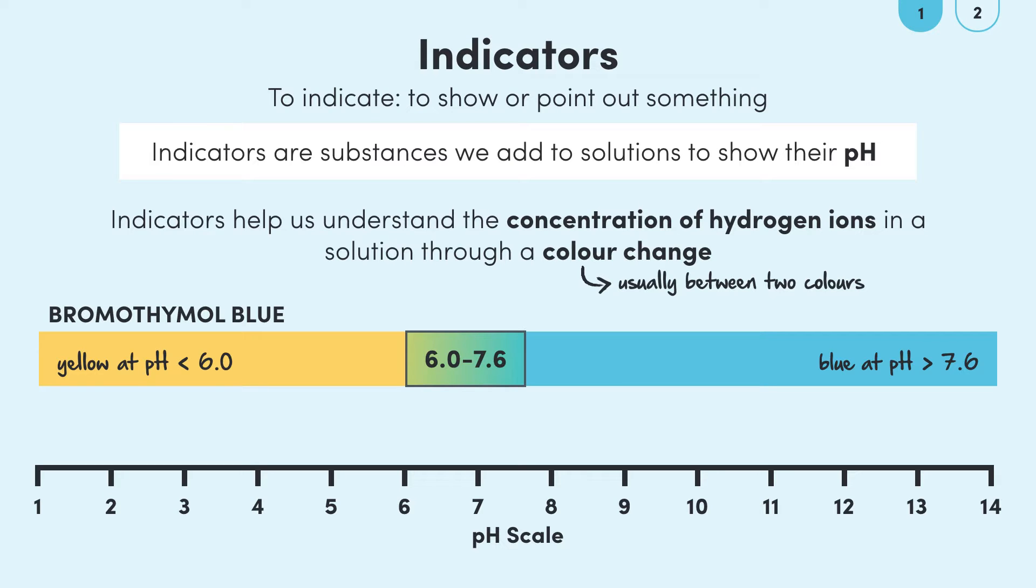There are many different indicators and different indicators change colors at different pHs. So we use these different indicators in various situations depending on the unique color change ranges of each indicator.